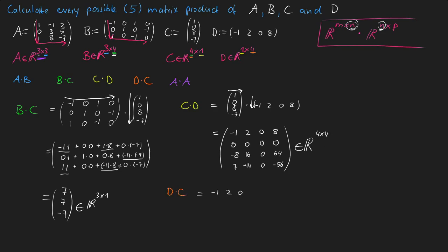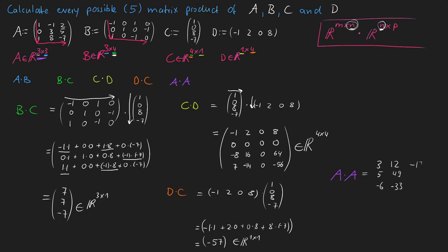For D×C, we can see that matrix multiplication is not commutative. We compute (−1)×1 + 2×0 + 0×8 + 8×(−7), which gives a 1×1 matrix with the single entry −57. For our last multiplication A×A, the result has been noted down — you can try it yourself and check your answer.